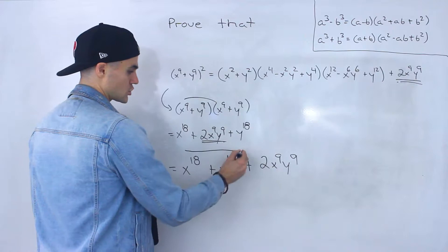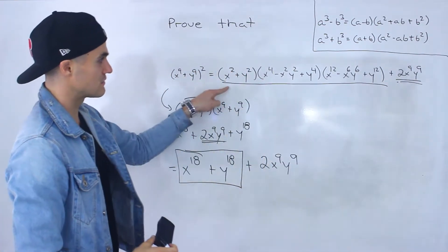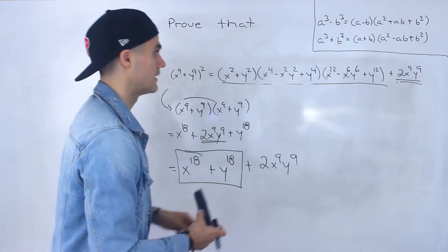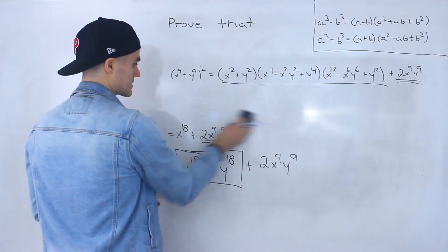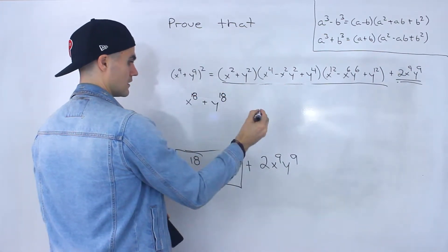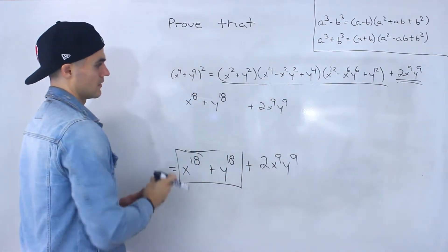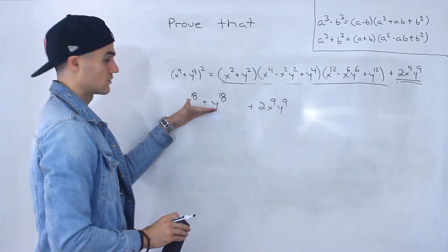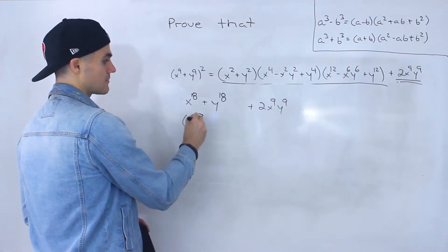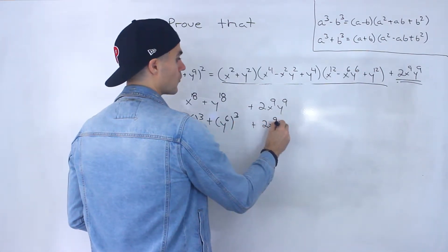So what we have to do is show how x to the 18 plus y to the 18 factors into those three brackets on the right side. If we can show that this factors into those three brackets, then we're going to end up having those three brackets plus that expression — the same expression on the left side. So I'm going to take x to the 18 plus y to the 18 and rewrite it as x to the 6 to the power of 3, plus y to the 6 to the power of 3, and then we still have plus 2x to the 9 y to the 9.